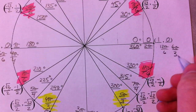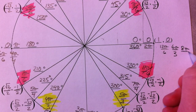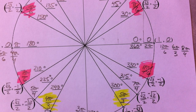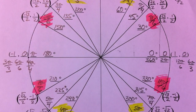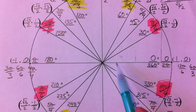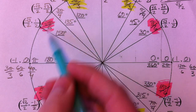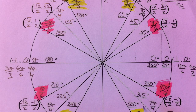Seven pi over four is one less than eight pi over four, which is two pi. What I want you to start noticing is that everything, if you relate it to zero, pi, or two pi — ask yourself: is it more or less than pi? Is it more or less than two pi? Then you can start thinking in those patterns.